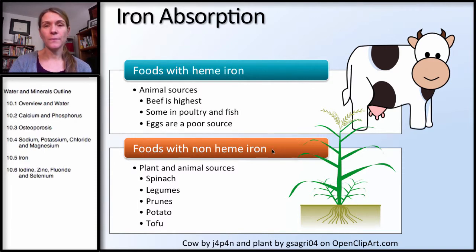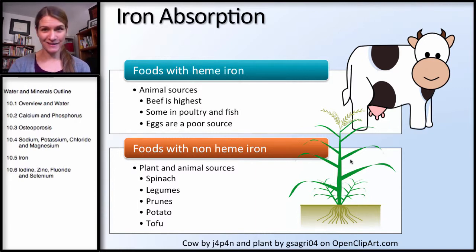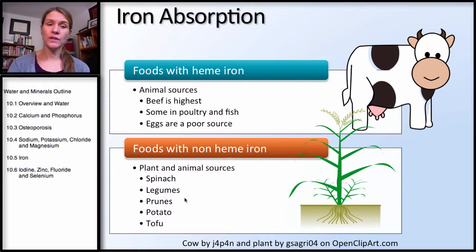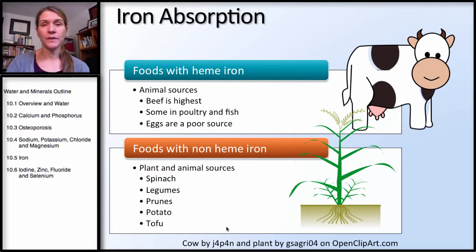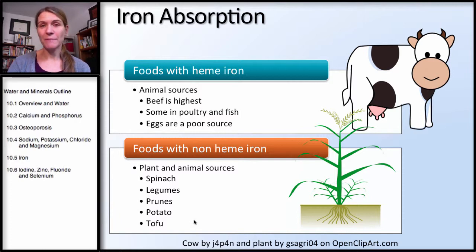Foods with non-heme iron include some animal foods as well as plants. Plant sources include spinach, legumes, prunes, potatoes, and tofu — all good sources of non-heme iron. Soybeans have a somewhat greater absorbability of iron. But many of these sources are fairly poorly absorbed. The absorption rate for non-heme iron is about 2 to 20%. This means if you're consuming mostly plant foods for iron, you are likely not absorbing very much, even if you're meeting the daily recommended amount.